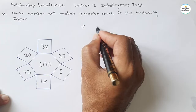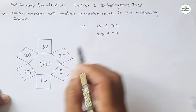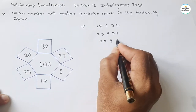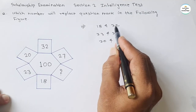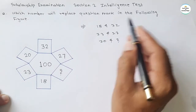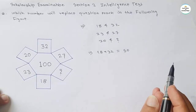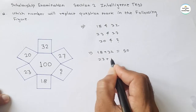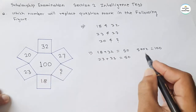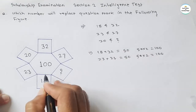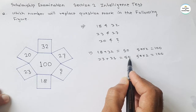The opposite number pairs are: 18 and 32, then 23 and 27, and 20 with the question mark. Taking the addition of the first pair: 18 + 32 = 50. Taking the addition of the second pair: 23 + 27 = 50. If we multiply 50 by 2 we get 100, which is the central number. So the relation is: take the addition of the two opposite numbers, multiply by 2, and get the central number.